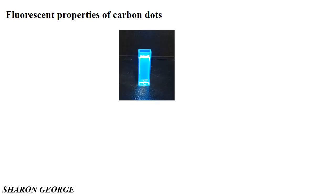Regarding the fluorescence properties of carbon dots — in the picture shown here, this is one of the carbon dots we prepared in our laboratory from citric acid. This is an N-doped carbon dot prepared by hydrothermal method. Under UV light, we can see the intensity of the fluorescence is much brighter.